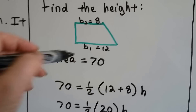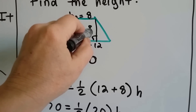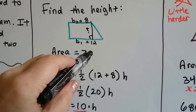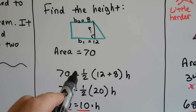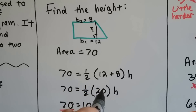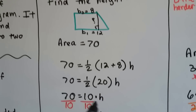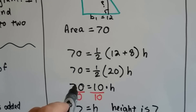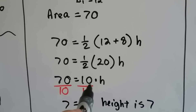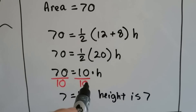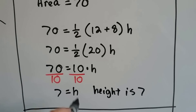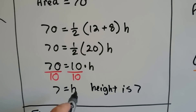What if we need to find the height? If base 2 is 8, base 1 is 12, and the area is 70, then 70 equals half of 12 plus 8 times h. We do 12 plus 8 to get 20, so 70 equals half of 20 times h. Half of 20 is 10, so 70 equals 10 times h. To get h by itself, we use the inverse of multiplication — division — and divide both sides by 10. 70 divided by 10 is 7. The height is 7.